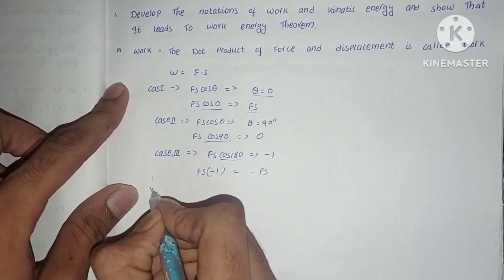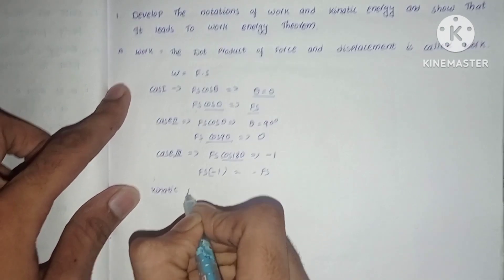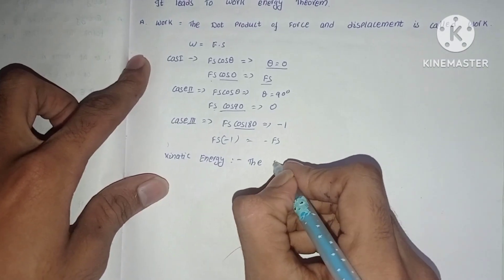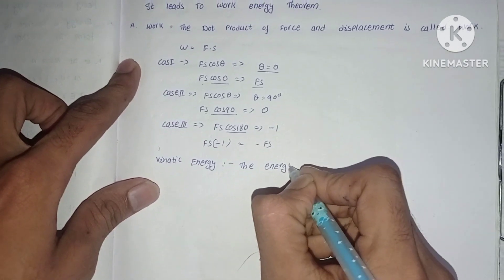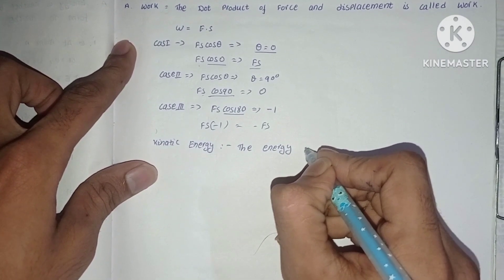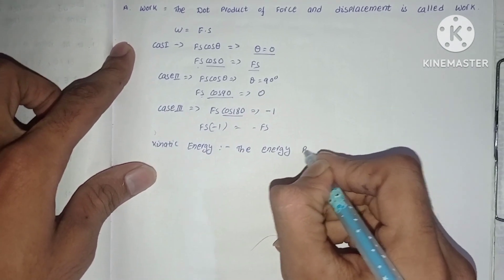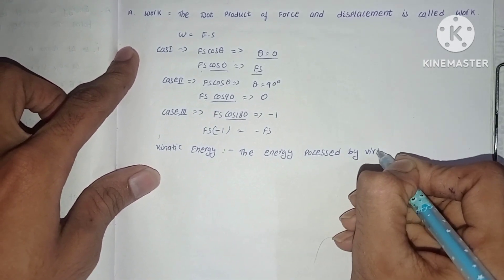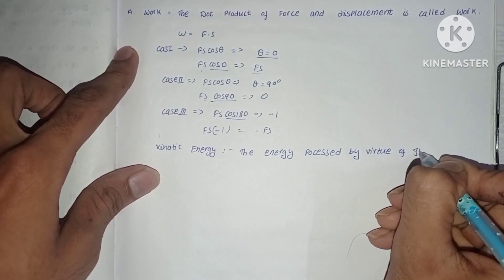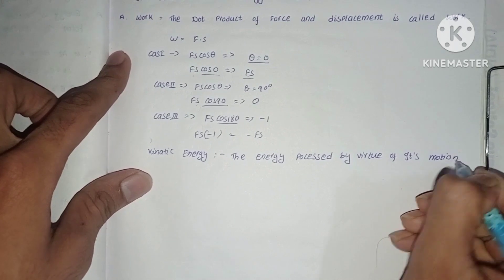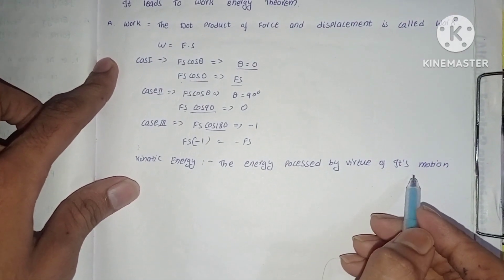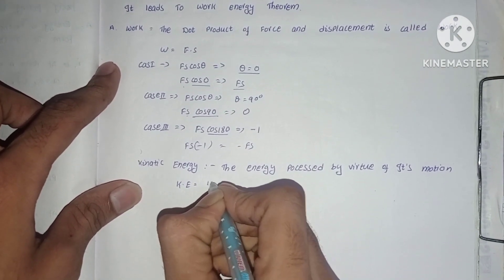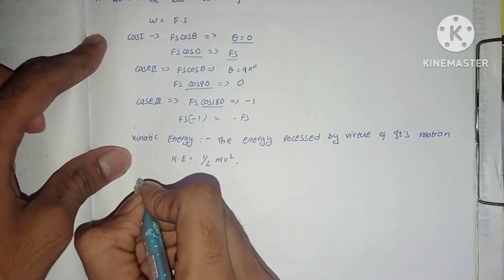Now let us know the definition of kinetic energy. Kinetic energy is the energy possessed by virtue of its motion, and it is called kinetic energy. The formula of kinetic energy is KE = ½mv².